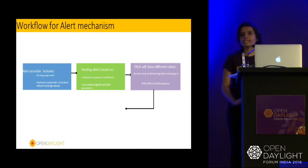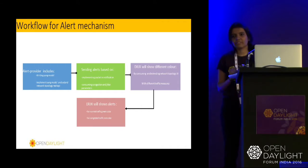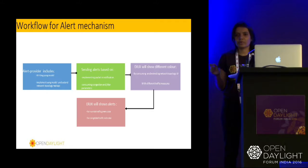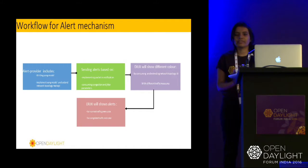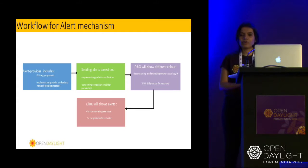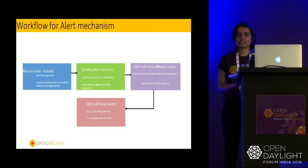For example, considering congestion and jitter as traffic parameters: if jitter is zero and congestion is zero, that means it's an idle condition, so the traffic color will be green. If we have any other combination — zero-one, one-zero, or one-one — the traffic color flow will be red.